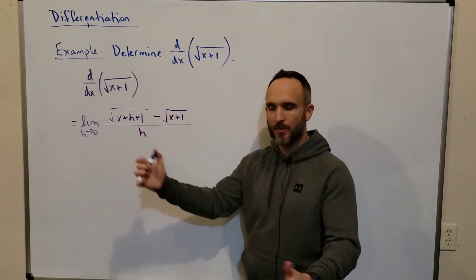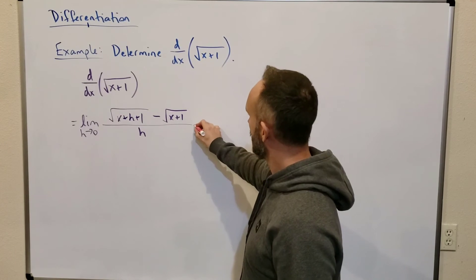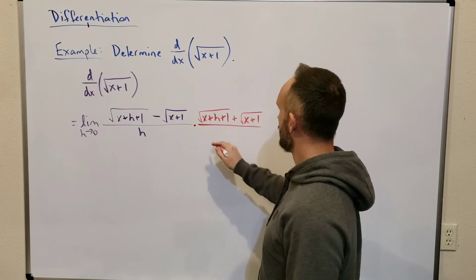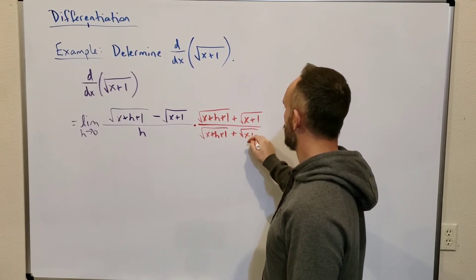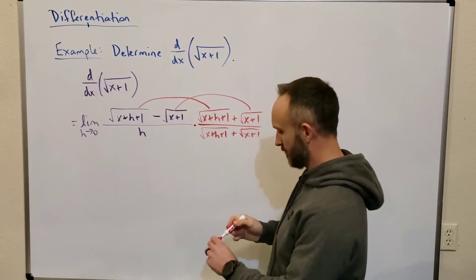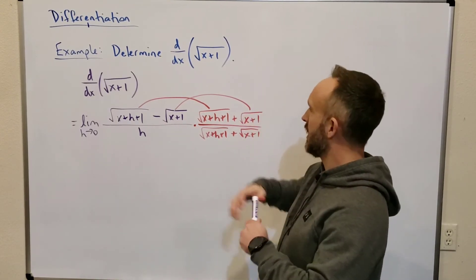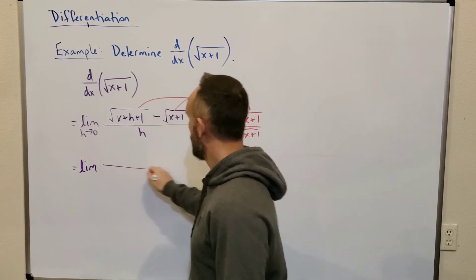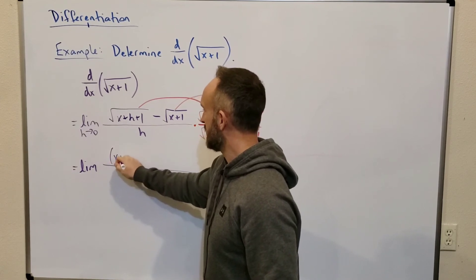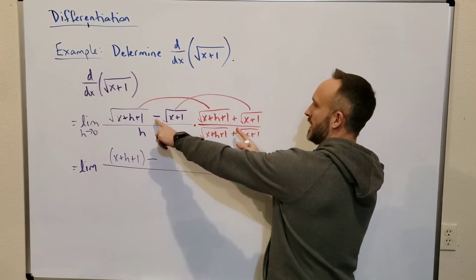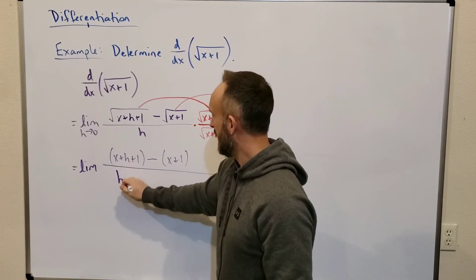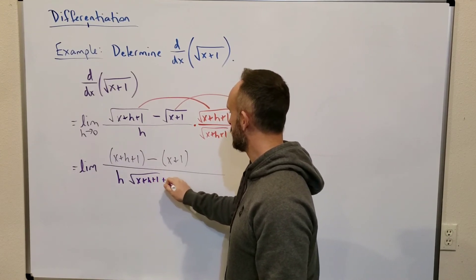Because we have this difference of square roots on the top, we will multiply the top and the bottom by the conjugate: √(x+h+1) + √(x+1). On the top, they're conjugates, so really all we have to do is multiply the first two terms and the last two terms — that's why we multiply by the conjugate, because a lot of terms cancel. When I multiply these two square roots, they're the same, so the square root part cancels, and we get (x+h+1) minus — because I've got a negative times a positive — minus (x+1). That's all over h times [√(x+h+1) + √(x+1)].